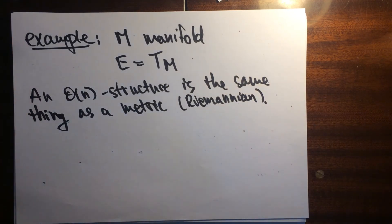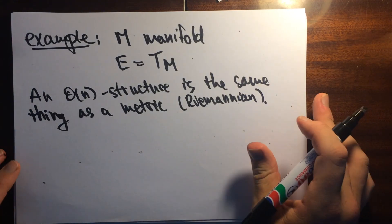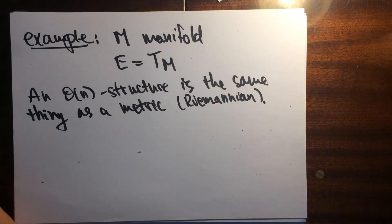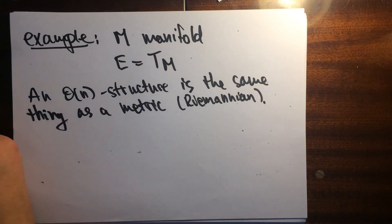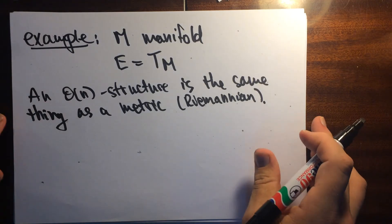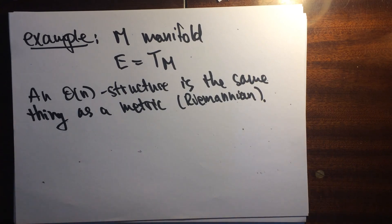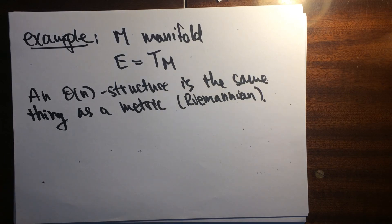These G-structures encode things that are geometrically interesting to us. Finding reductions of structure groups is inherently interesting — in particular, the transition maps for arithmetic jet spaces is one of the things I'm interested in. That being said, I'll close this out. Bye.